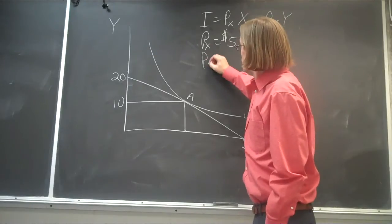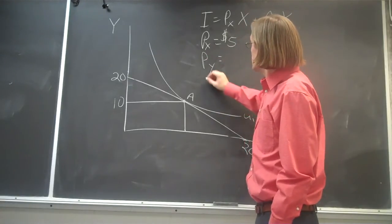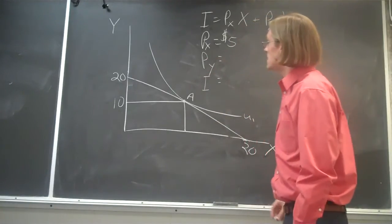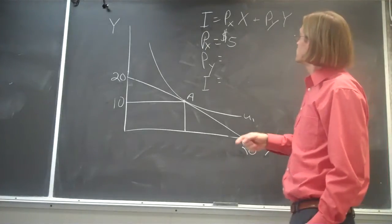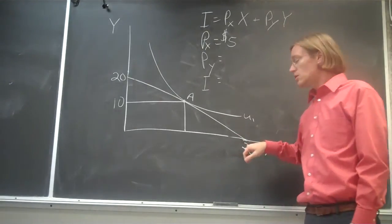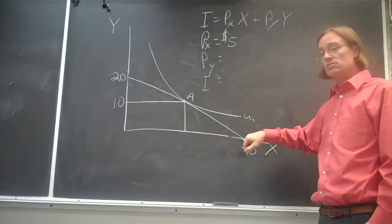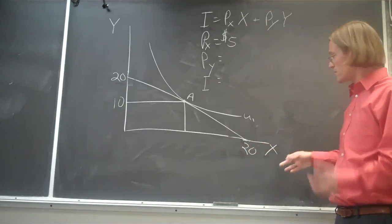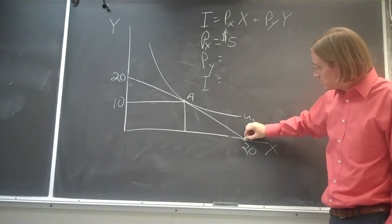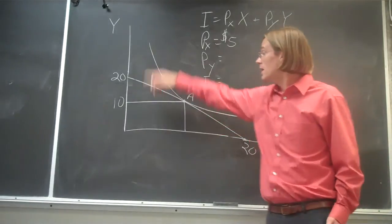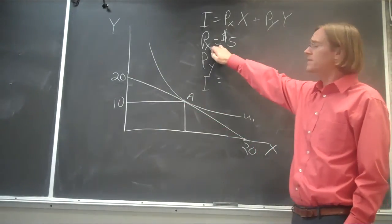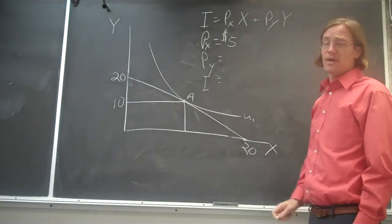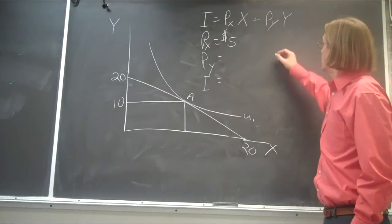We need to figure out what the price of Y is and what our income is. To do that we can first assume that we're purchasing all good X. So we're spending all of our money on good X, we're going to be at this point purchasing no Y. And we know that the price of X, we're given the price of X is $5. And if that's the case,